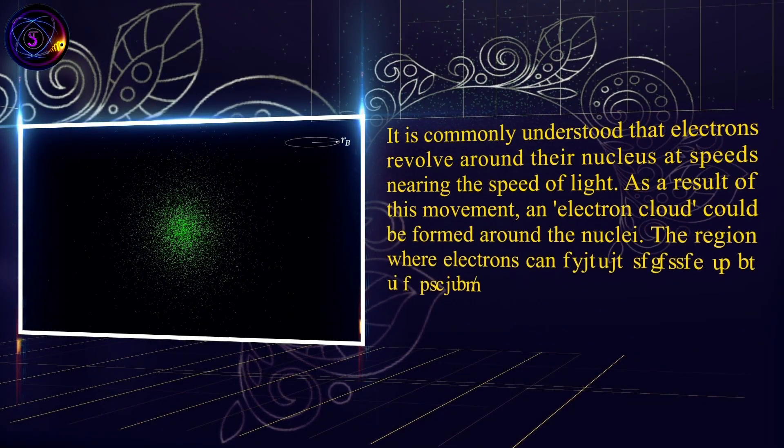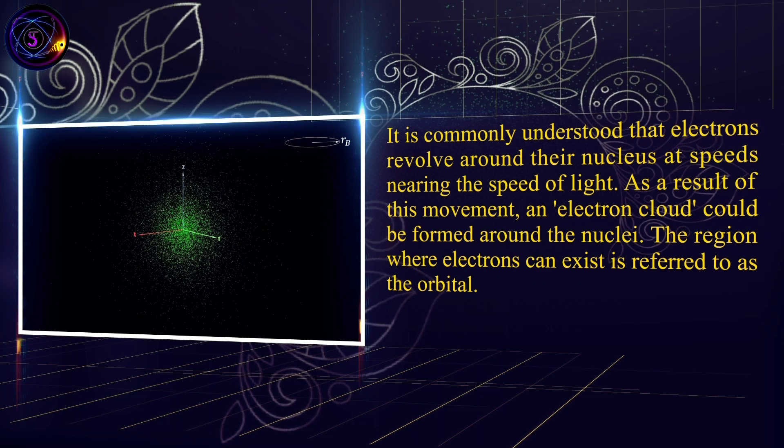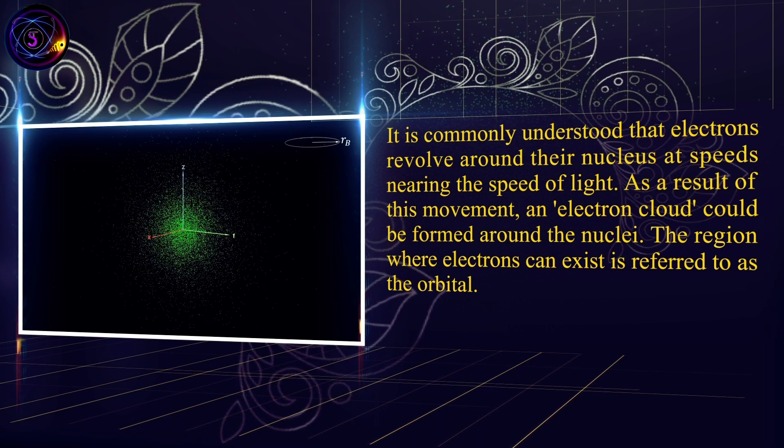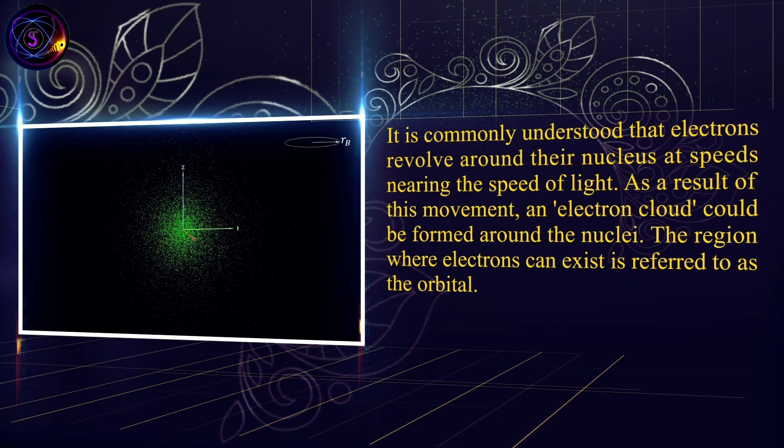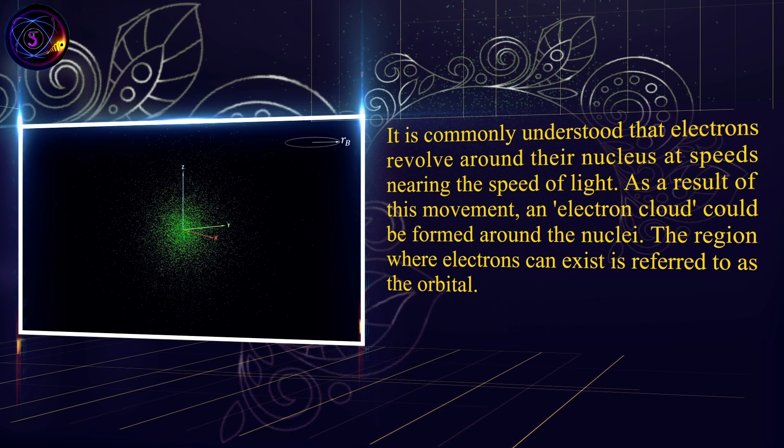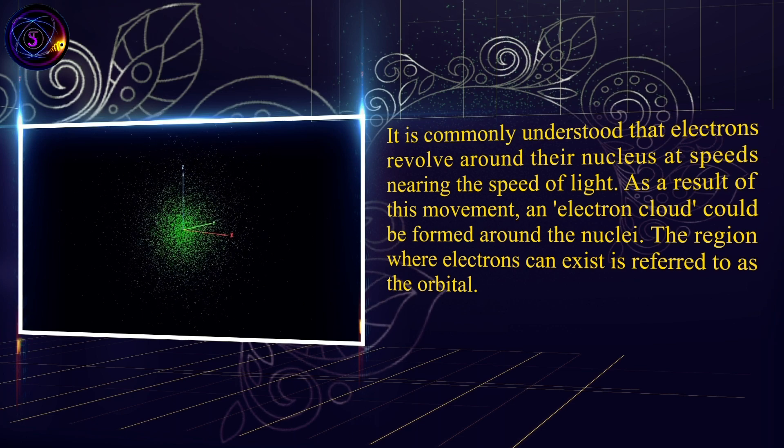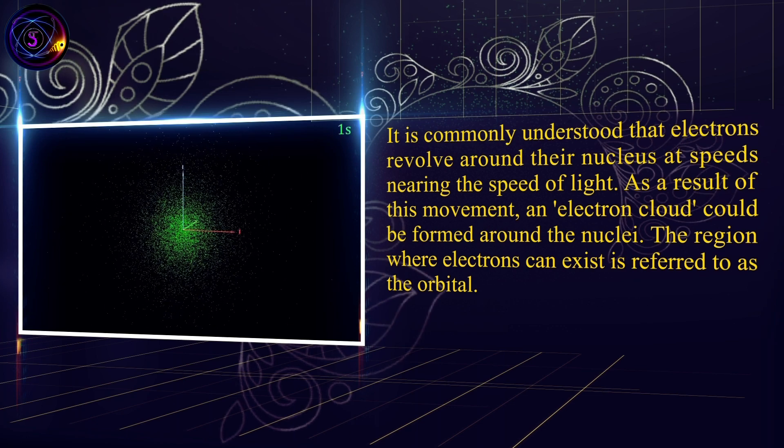It is commonly understood that electrons revolve around their nucleus at speeds nearing the speed of light. As a result of this movement, an electron cloud could be formed around the nuclei. The region where electrons can exist is referred to as the orbital.